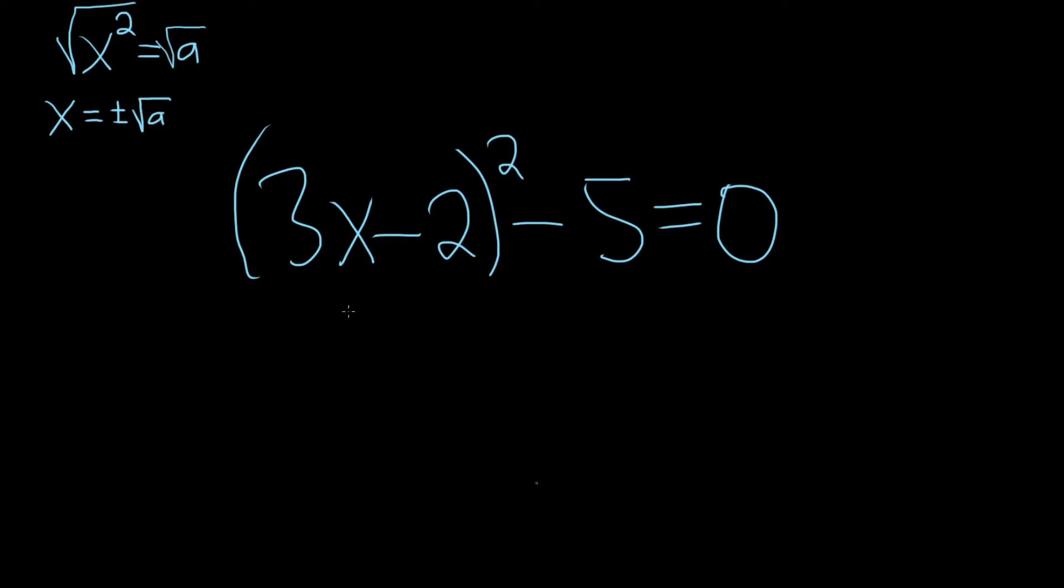So here we'll start by first isolating the squared part. We'll start by adding 5 to both sides, so plus 5, plus 5. That'll leave us with 3x minus 2 squared, and that's equal to 5.